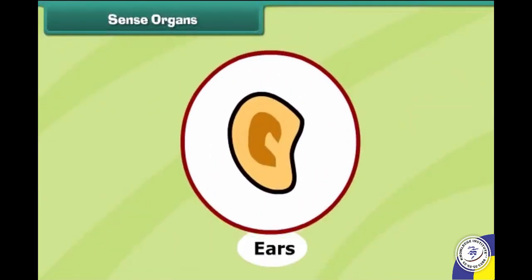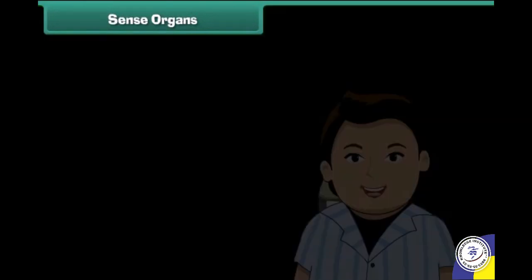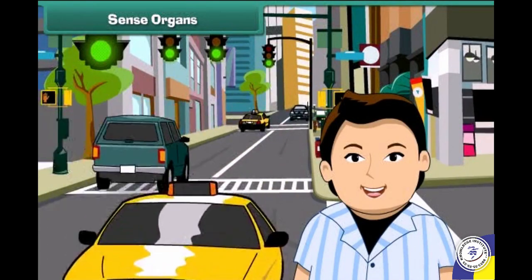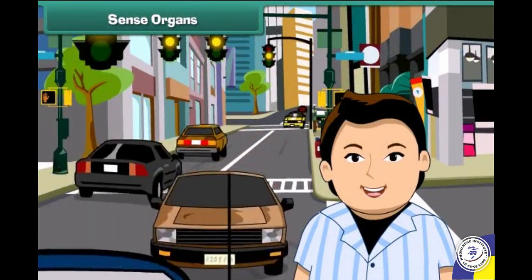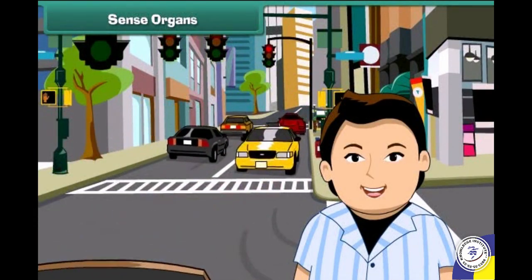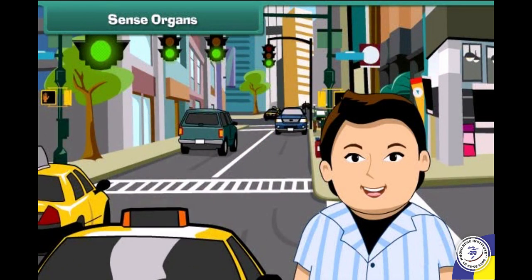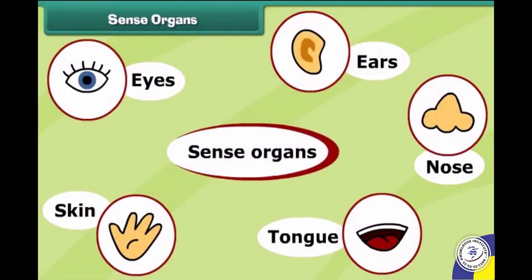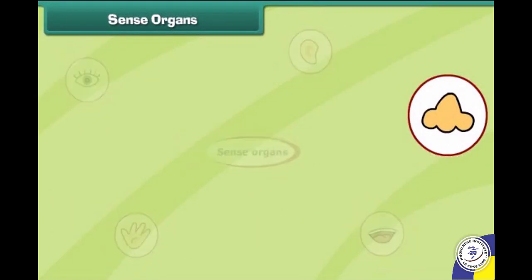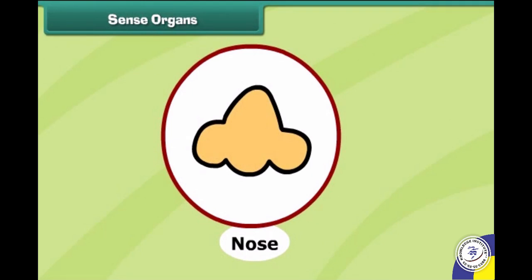Now let's know about ears. We have two ears on each side of our face. The ears help us to hear sounds in our surroundings. Let's move on to the next sense organ. We can smell various good and bad odors with the help of our nose.